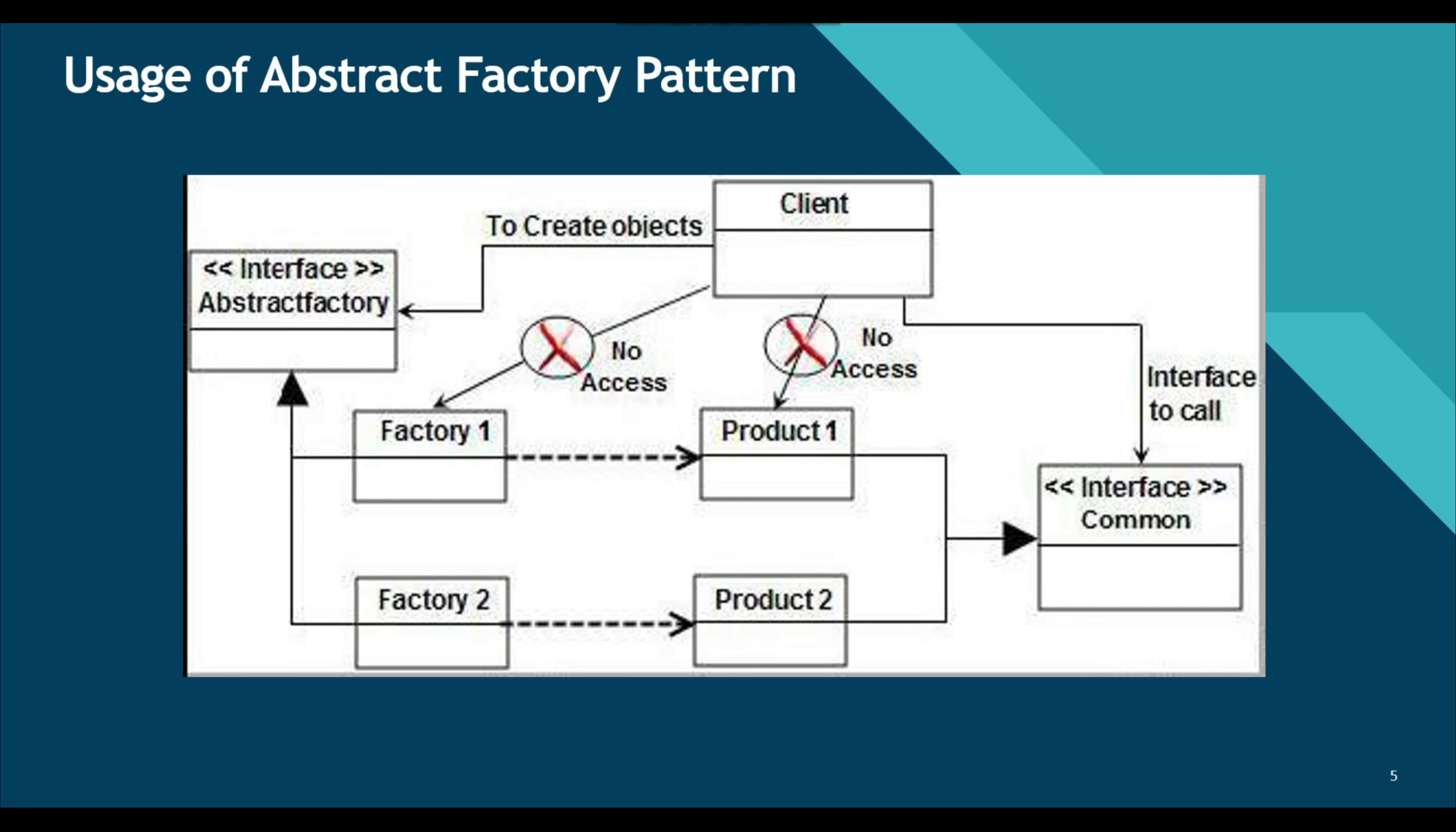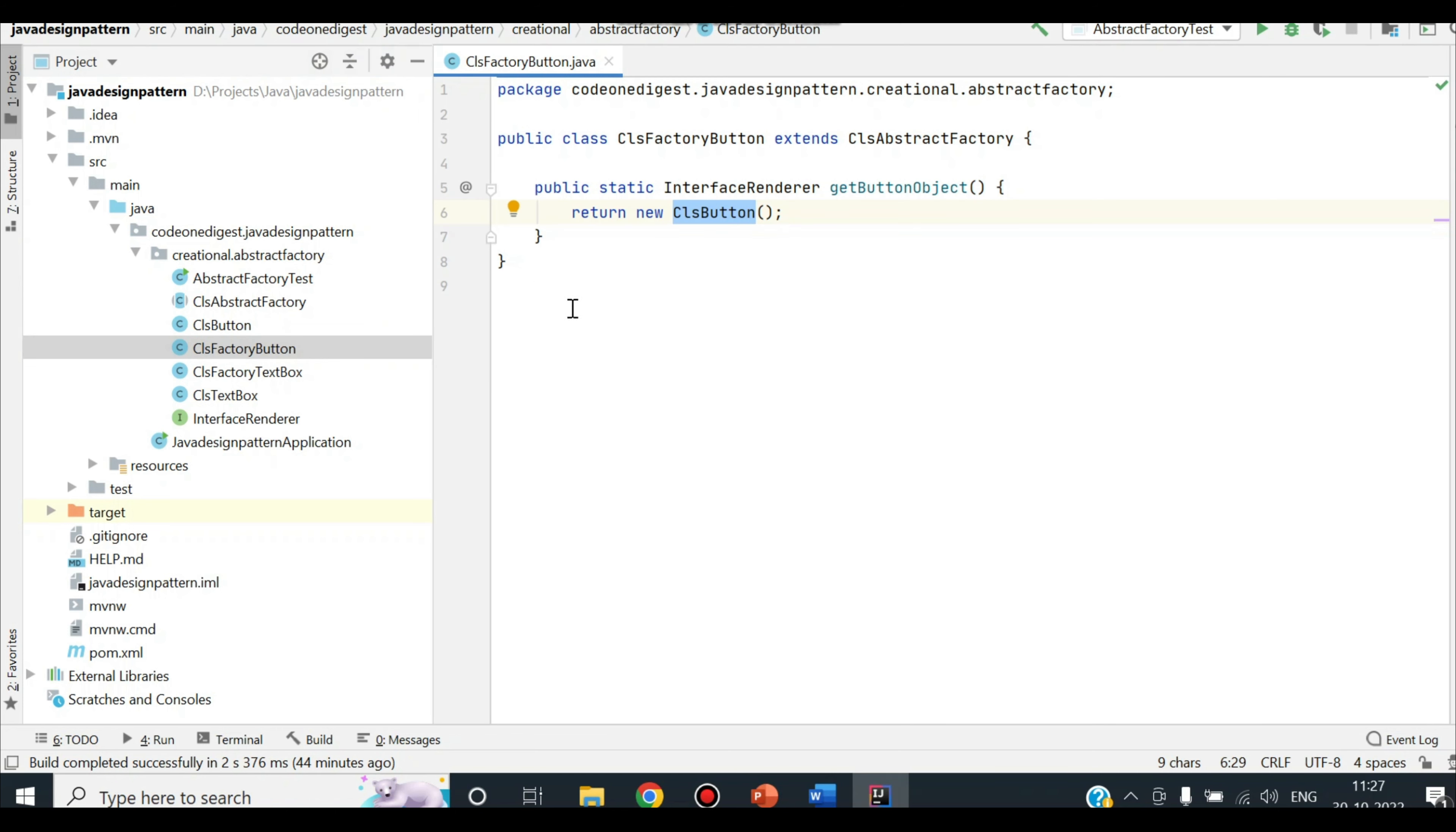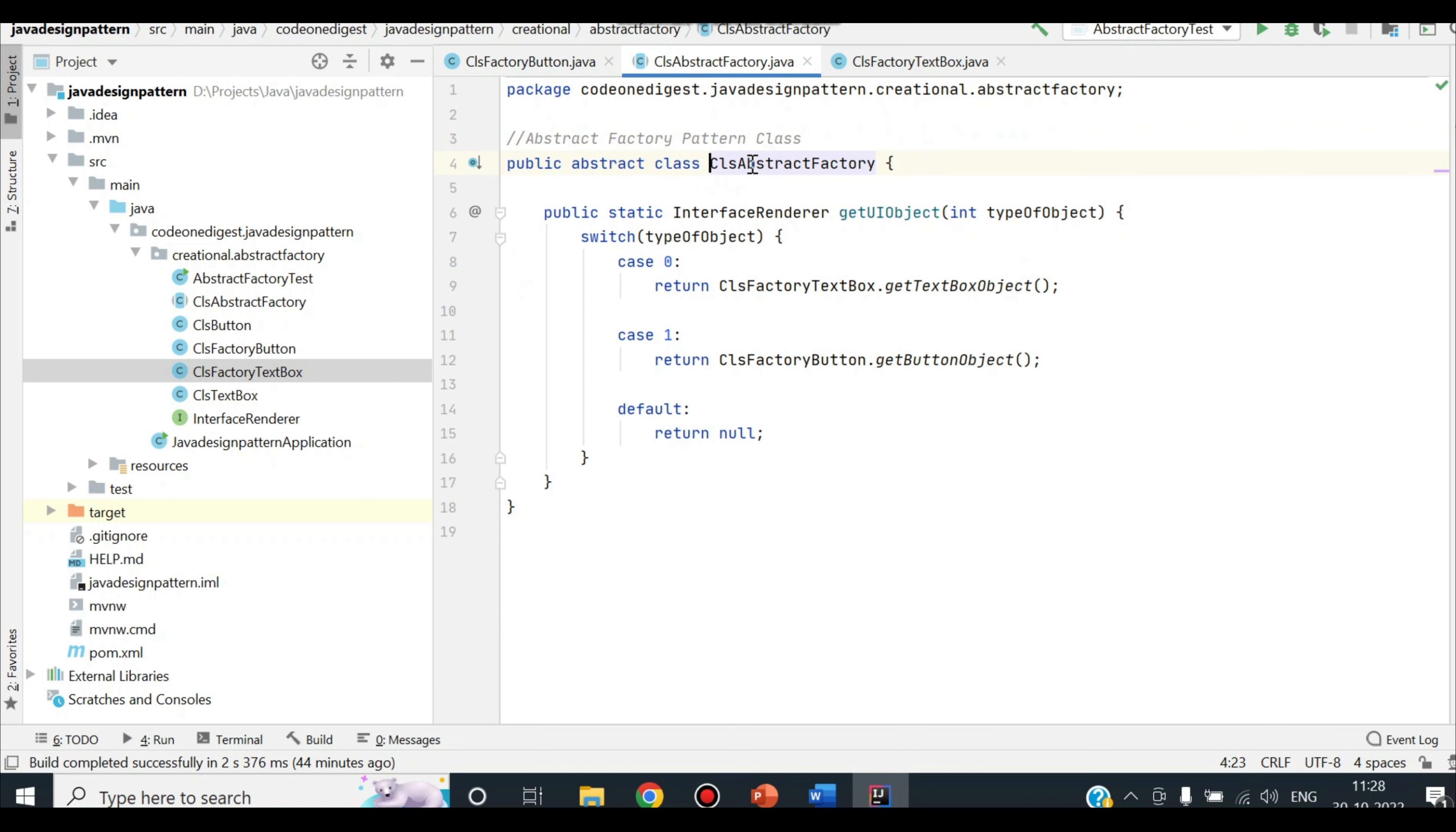I have prepared a code snippet for this pattern. Let's see that implementation and try to understand abstract factory pattern. So I am in IntelliJ IDE now and here I have created some classes and interfaces. I have these two factory classes: factory button and factory text box. If you see here, this factory class is just returning an instance of text box and here it is returning an instance of button. Now these factory classes are extending an abstract factory class called abstract factory.